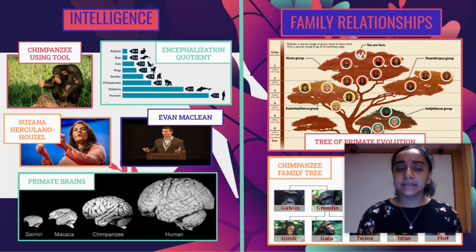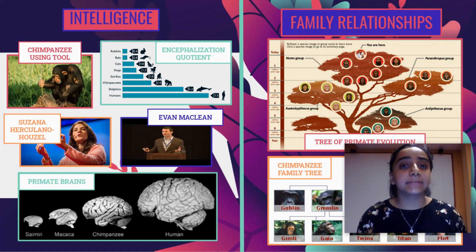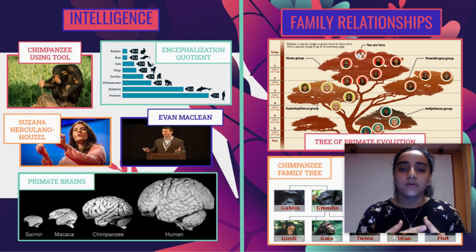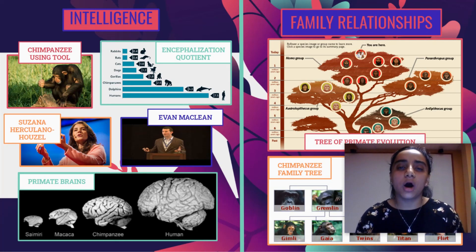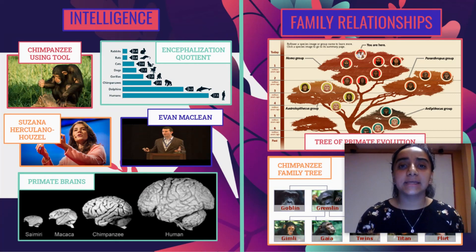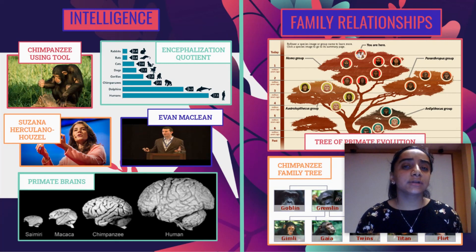Chimpanzees live in large troops broken into family subunits; the integral family unit is a mother and her offspring. Goodall observed five main relationships in chimpanzee families and compared them to human families. The first is mother-child — the closest bond — for the mother teaches her child how to climb, walk, fish for termites, and find a place in the social hierarchy. Goodall realized the fundamental importance of mothers.